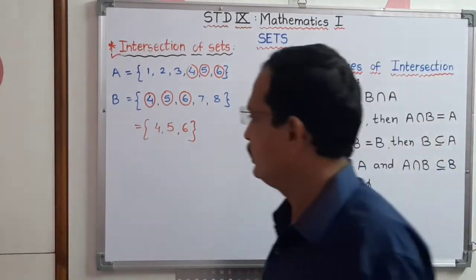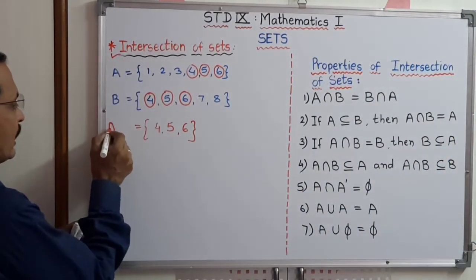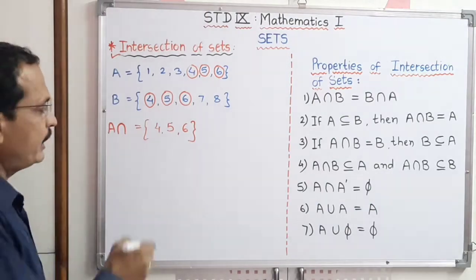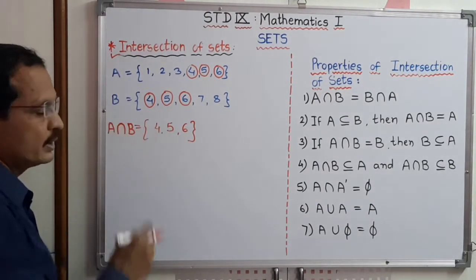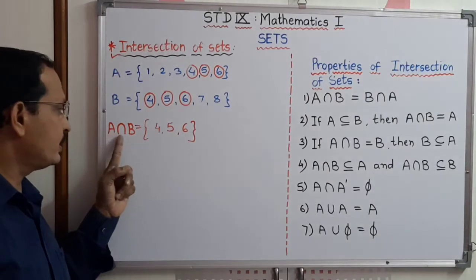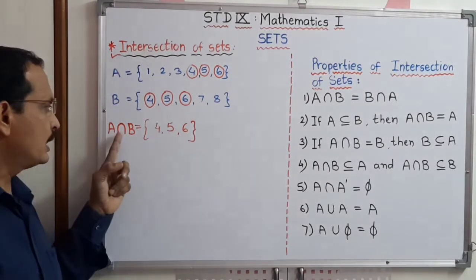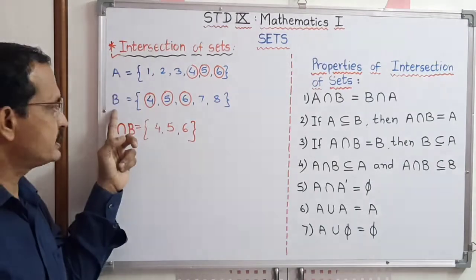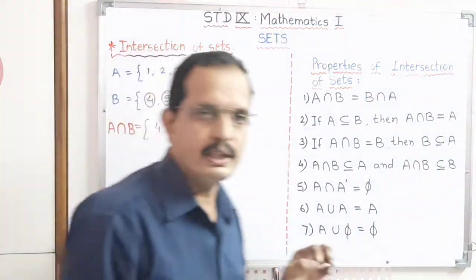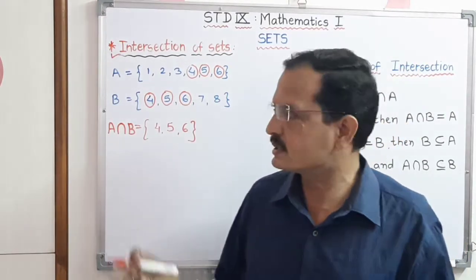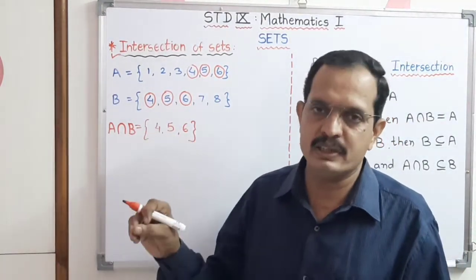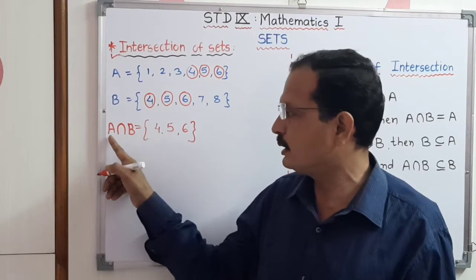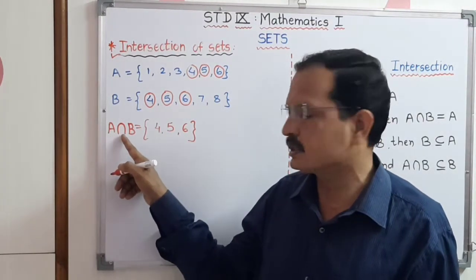If we have to write it symbolically, we write A intersection B using the intersection symbol. The elements present in this set are present in set A as well as in set B. In short, the set of common elements is called the intersection of the two sets, and we read it as A intersection B.